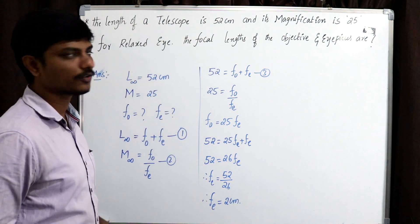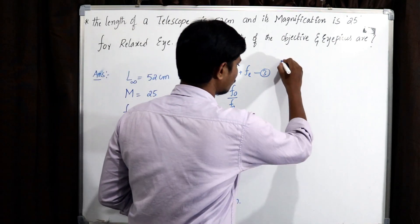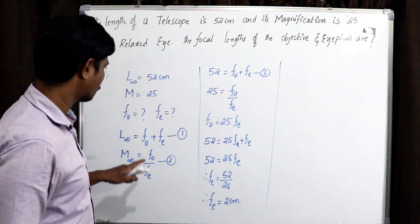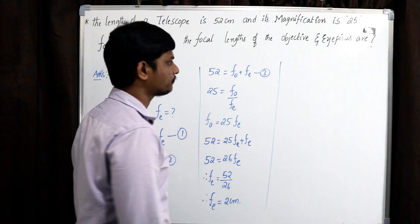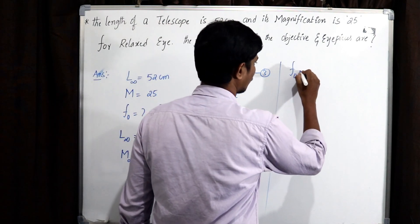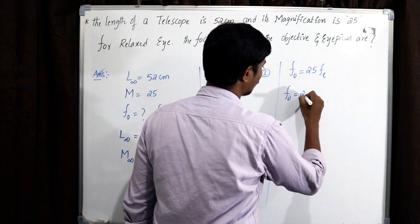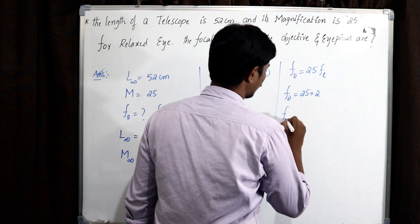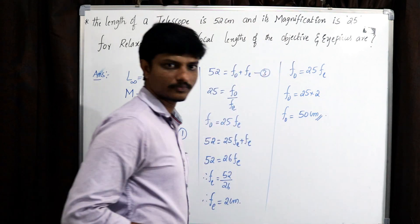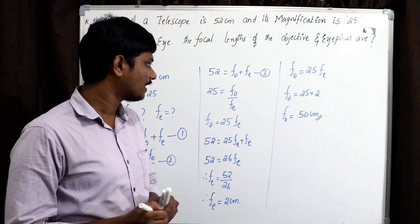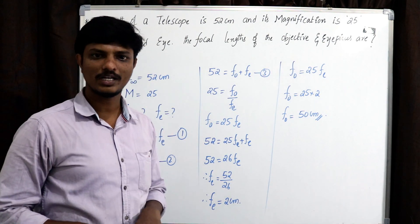We got the focal length of the eyepiece. Now let us calculate the focal length of the objective lens. We know F0 equals 25·FE, therefore F0 equals 25 × 2. The focal length of the objective lens is 50 cm. I hope you understand this problem — using the equations we derived, we solved it. Let us go into the next problem.